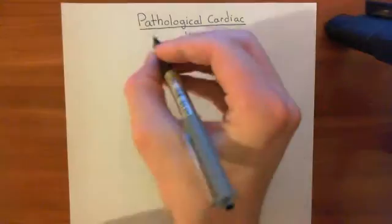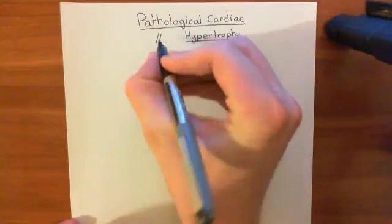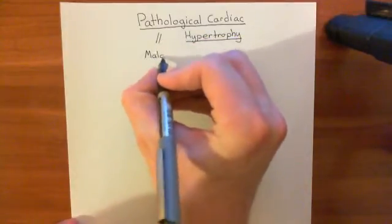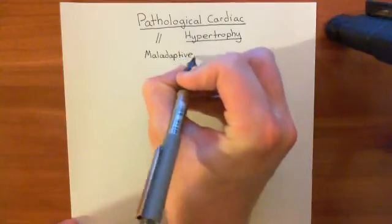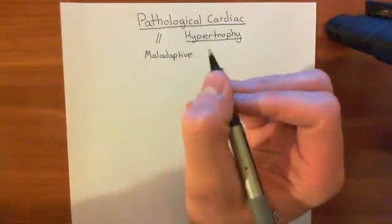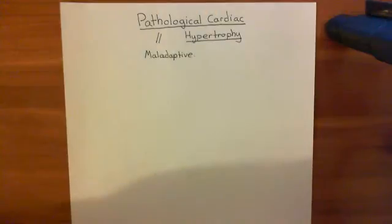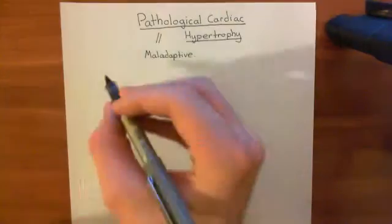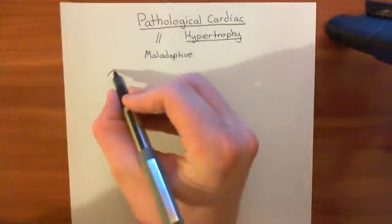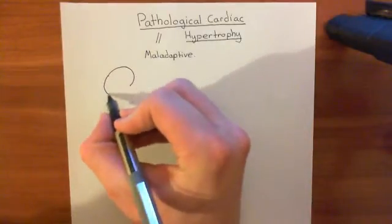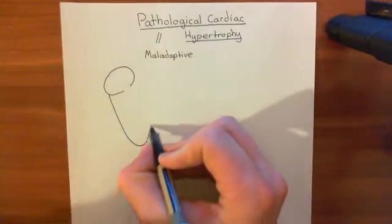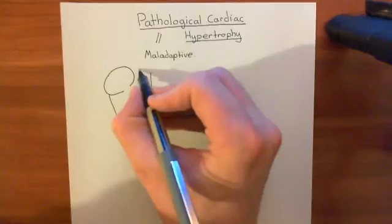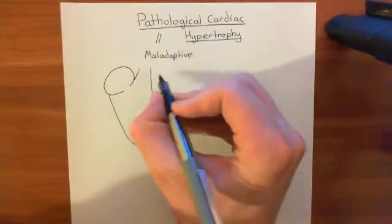Pathological cardiac hypertrophy is also known as maladaptive cardiac hypertrophy — either term can be used. So what happens in pathological cardiac hypertrophy? It starts with the heart struggling. Let's draw a picture of the heart so that we can have something to point at. Here is our right ventricle with the pulmonary trunk coming off there.